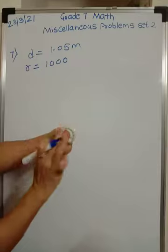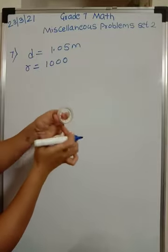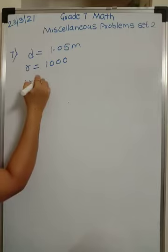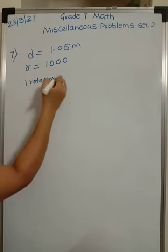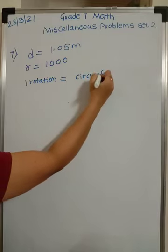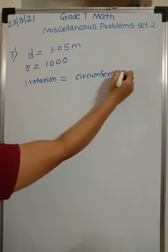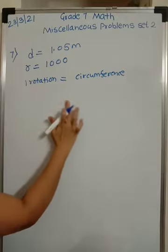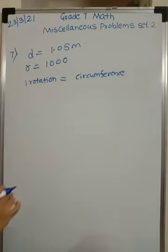So if it completes one rotation, distance covered is equal to the circumference. So what you should remember? One rotation is equal to circumference. That is, distance covered would be equal to the circumference.